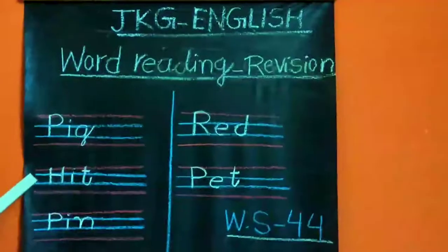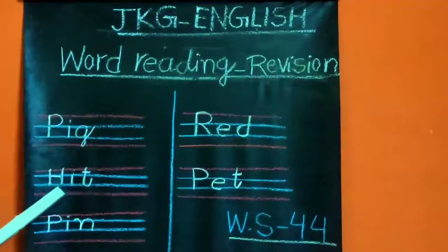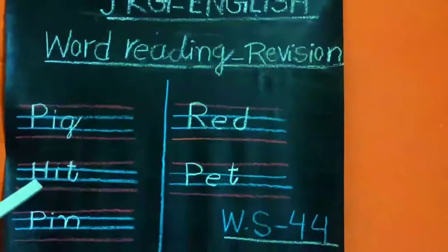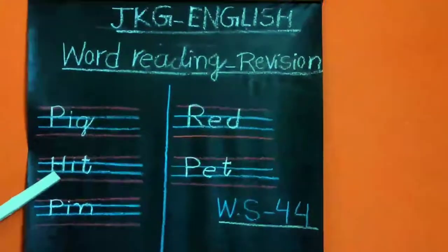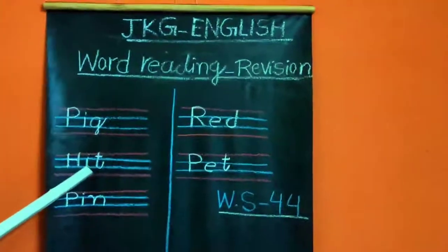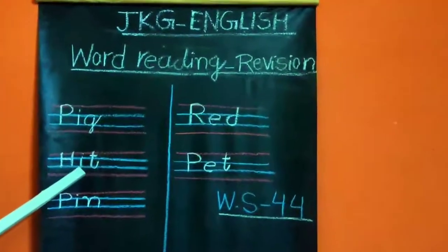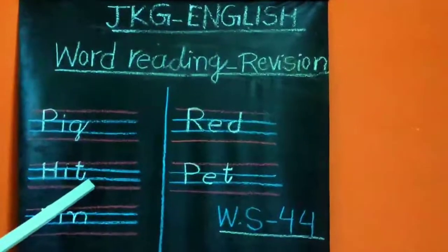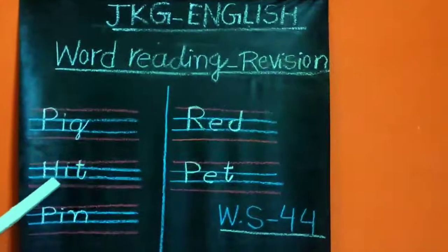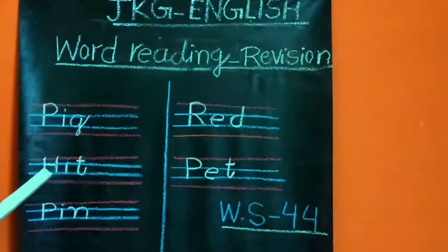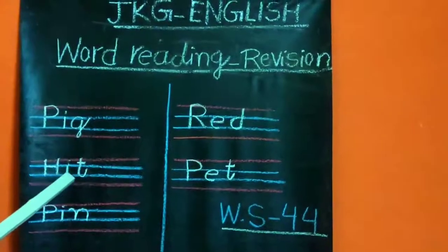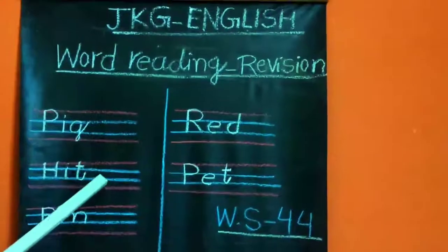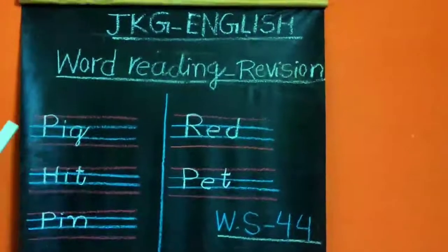Now here I have written 'hit'. The beginning sound of this letter is 'ha', the middle sound is 'e', and the end sound is 'ta'. So how we will read this letter? Ha, e, ta — hit. Hit means marna.